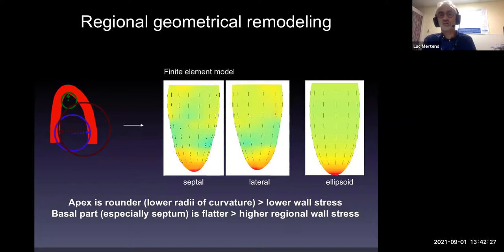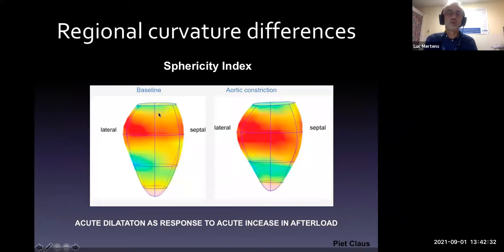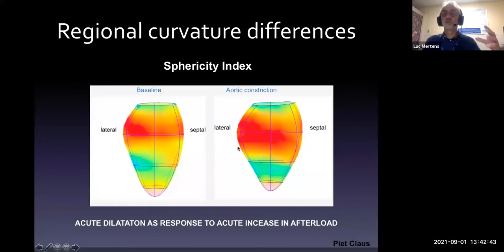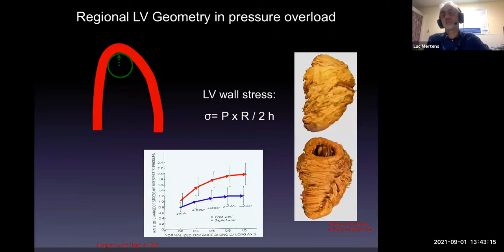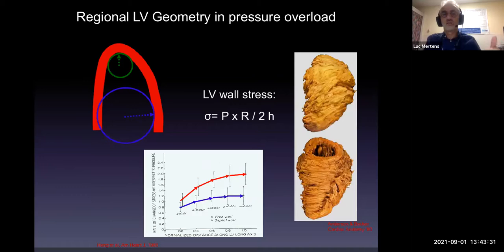These parameters acutely change when you do aortic constriction or have acute pulmonary hypertension — the right ventricle acutely dilates, which further increases its afterload. Increasing wall thickness reduces wall stress, which is one of the adaptation mechanisms for chronically increased pressure loading — by making the wall thicker, you reduce the afterload to the ventricle. Blood pressure is a determinant of afterload, but it is not the only determinant. You also have to take into account geometry — both the radius of curvature and wall thickness.